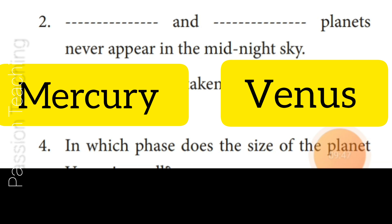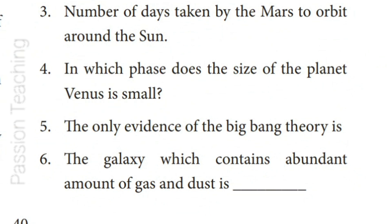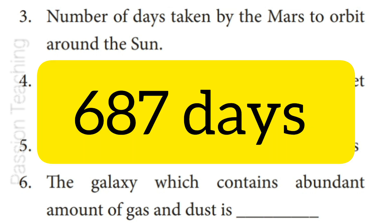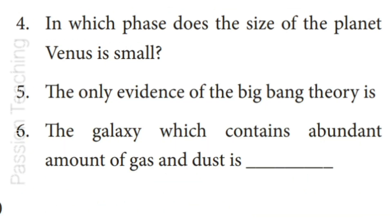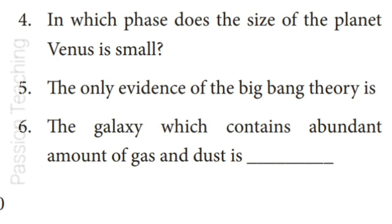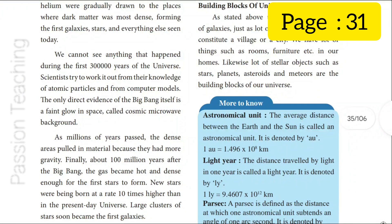Question 3: Number of days taken by Mars to orbit around the Sun — Answer: 687 days. Question 4: In which phase does the size of the planet Venus appear small? Answer: Give the phase number — referring to page 31.